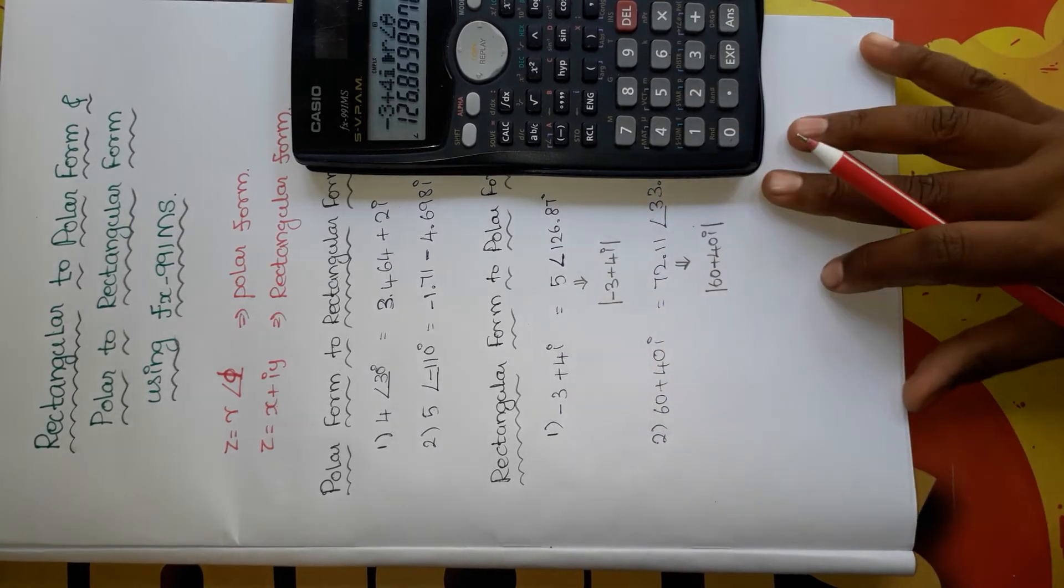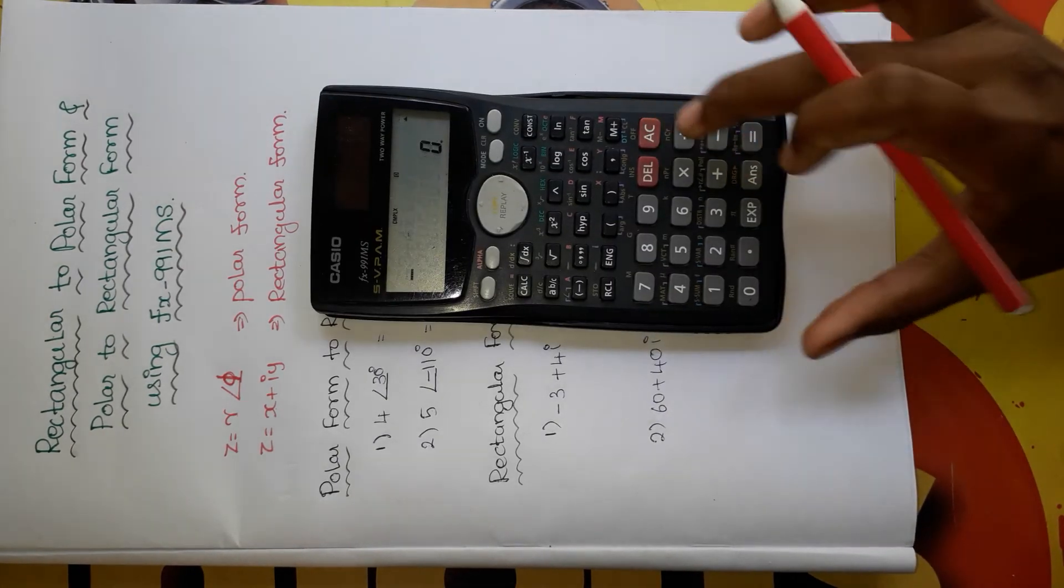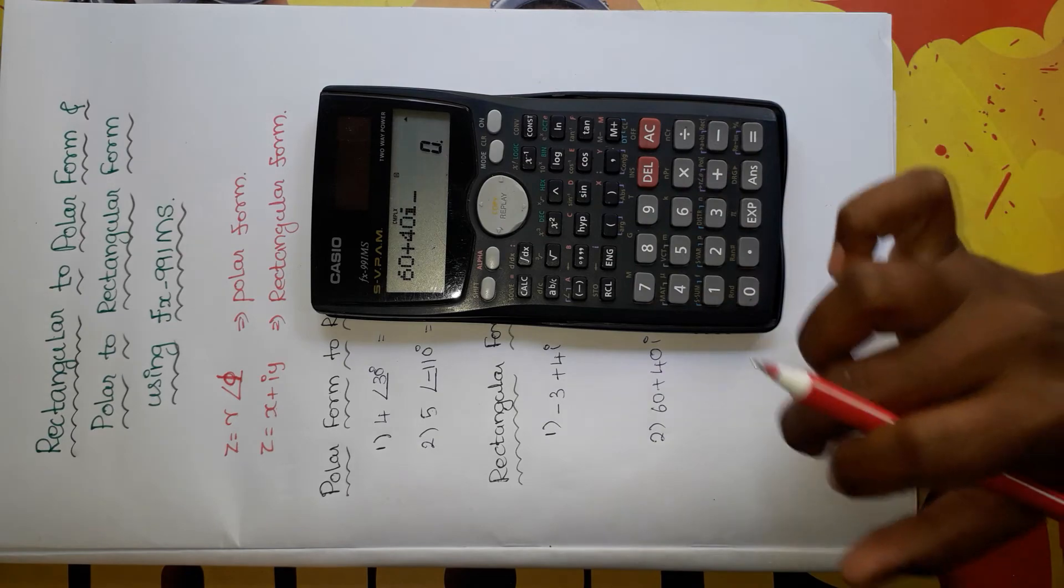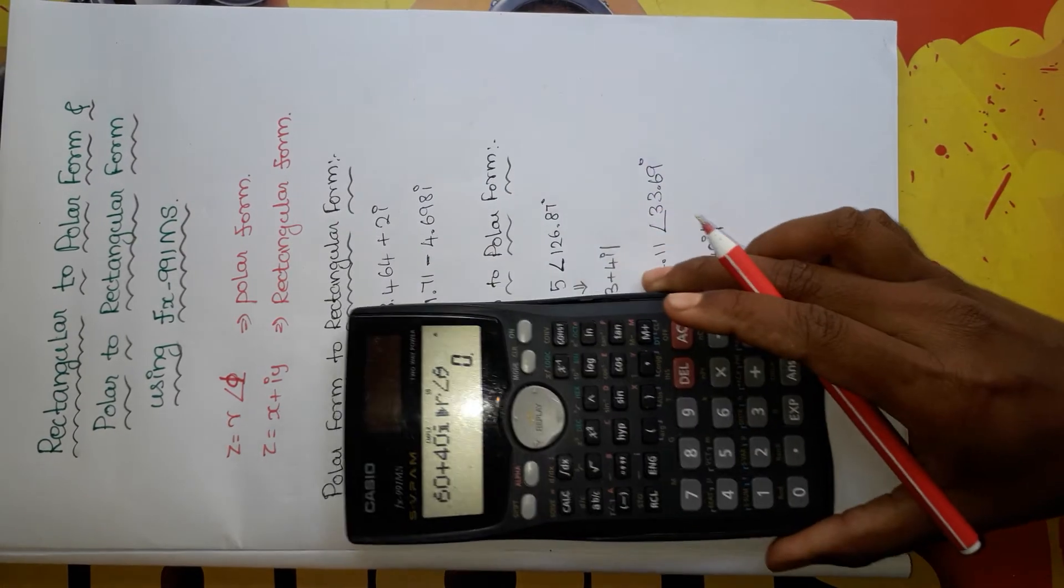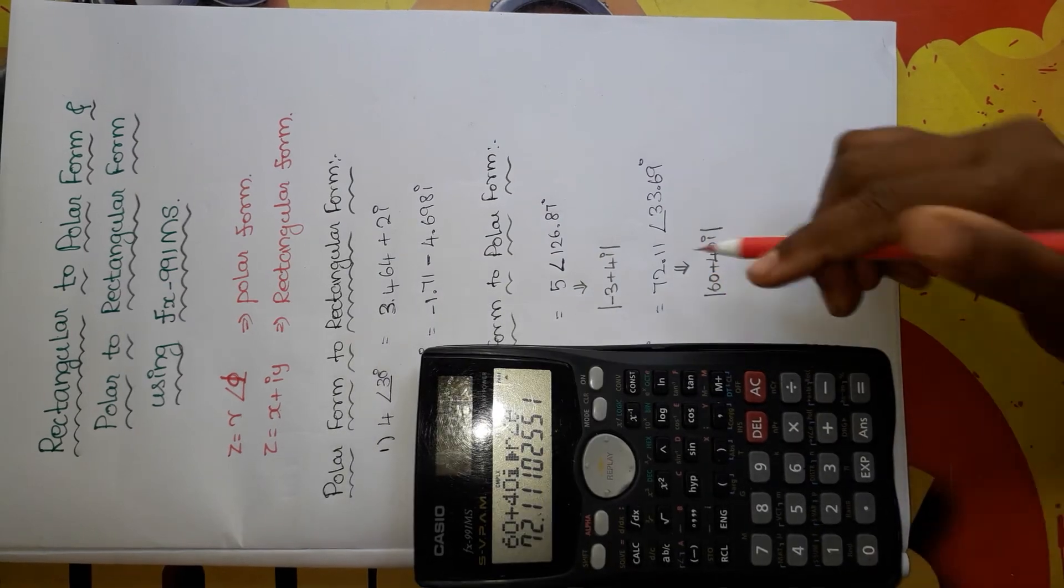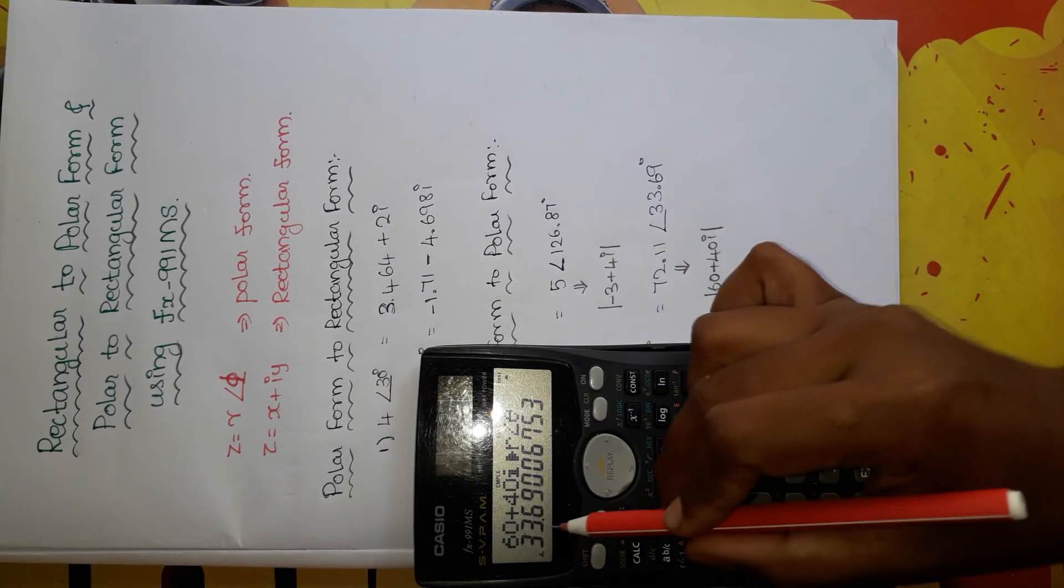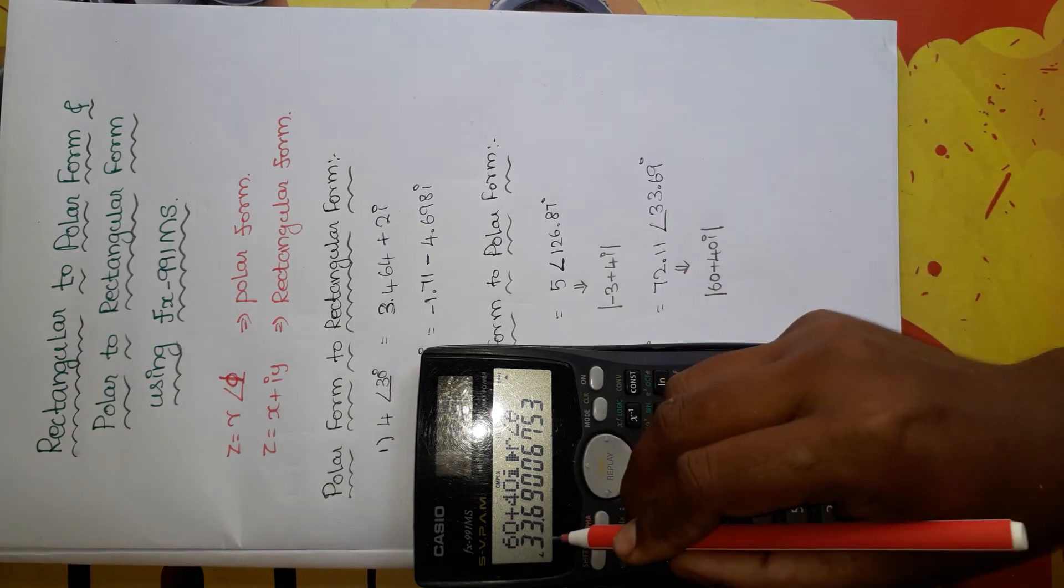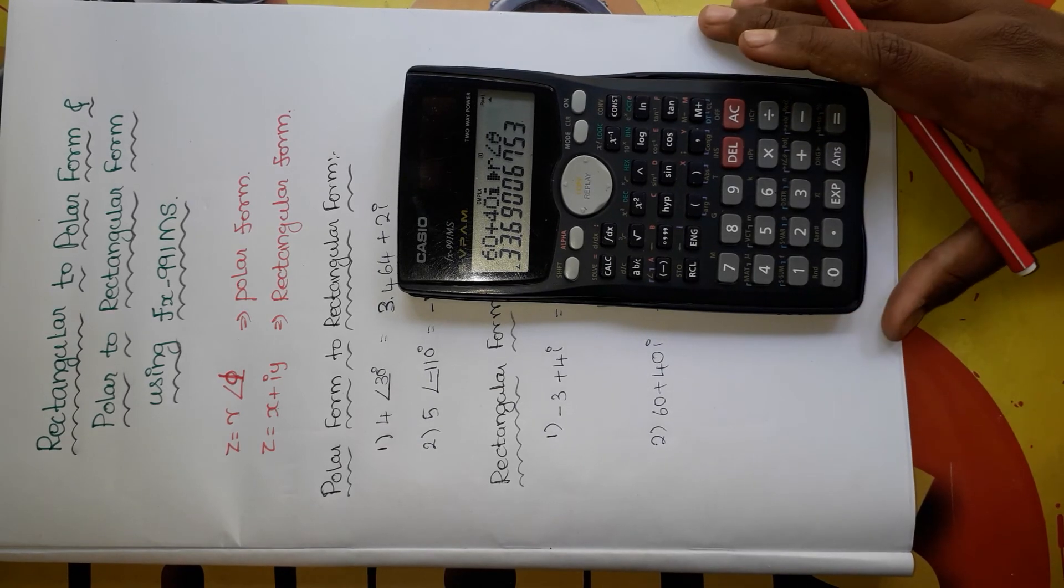Let's take this problem: 60 plus 40i. Press 60 plus 40i, now press shift and then the plus symbol, then press equal to. You will get the magnitude. Then press shift and then equal to, you will get the angle part of this number, 33.69.